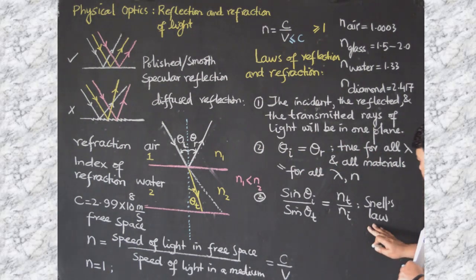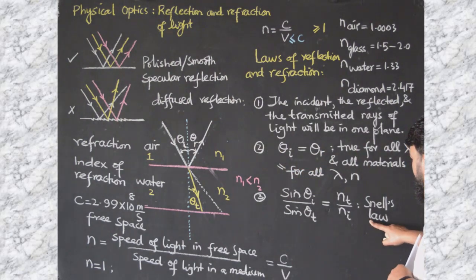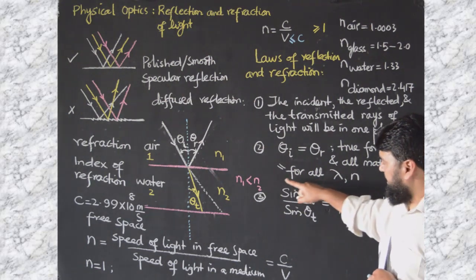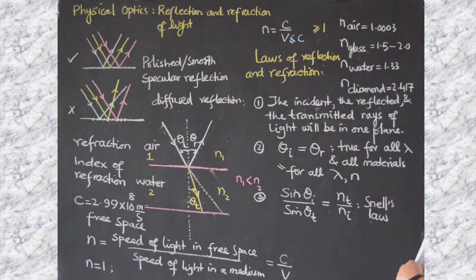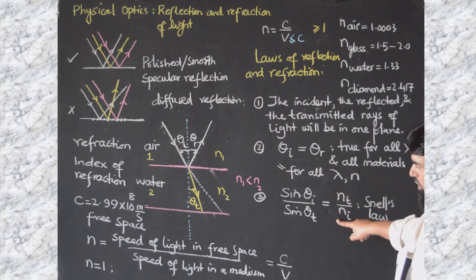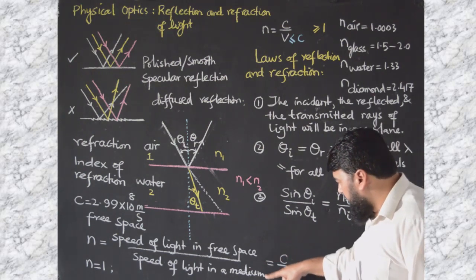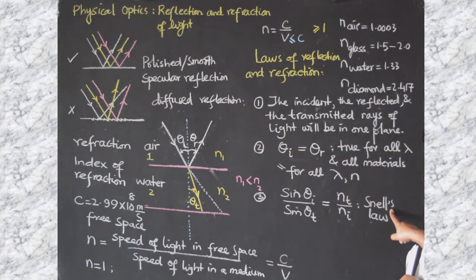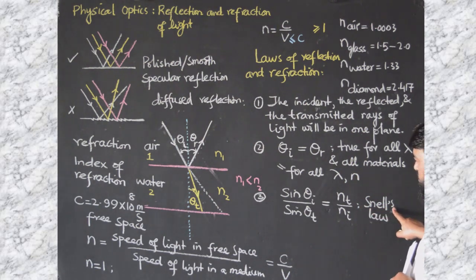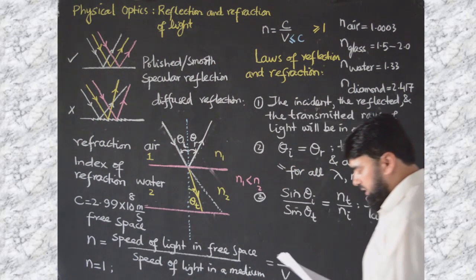We call this Snell's law. Snell was a Dutch scientist who is considered to have derived this law for the first time, although this is a bit doubtful, because for the derivation of this equation we have to utilize Maxwell's equations, which came a bit later than Snell's lifespan. But as a custom, we say it was derived by Snell, and this is the law of refraction.